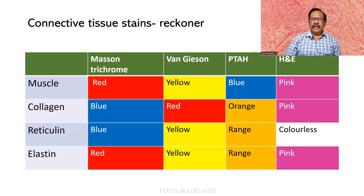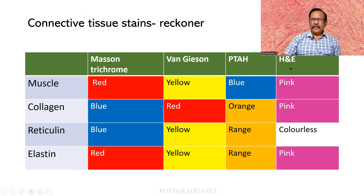For connective tissue stains, here is a ready reckoner. In Masson's trichrome: muscle takes up red, collagen blue, reticulum blue, elastin red. In Van Giesen: muscle yellow, connective tissue red. In phosphotungstic acid haematoxylin, muscle takes up blue and all others are orange. In H&E stain — that is the main problem with H&E — you have only two colours: pink and blue. All structures are pink and the nucleus alone takes up a blue colour. That is where the special stains come into action.